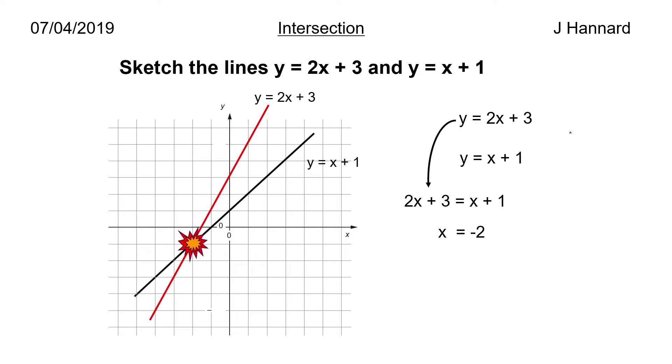So 2x plus 3 equals x plus 1 and then we tidy up and we say x equals minus 2. Then we can put that into one of these equations up here to work out what the y coordinate is. You get y equals 2 times minus 2 which is minus 4 plus 3 which is minus 1, which is exactly the same as what we got before minus 2, minus 1.